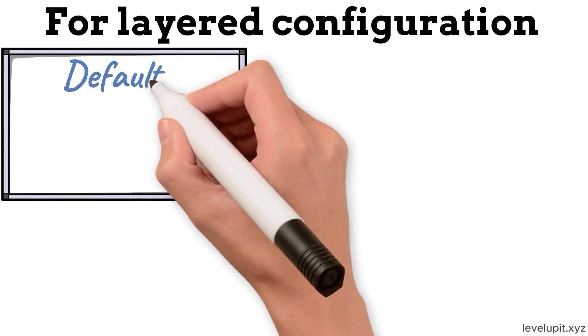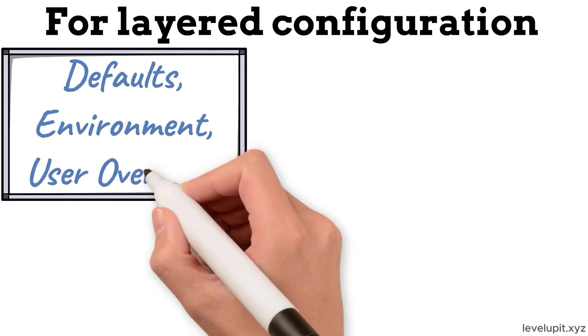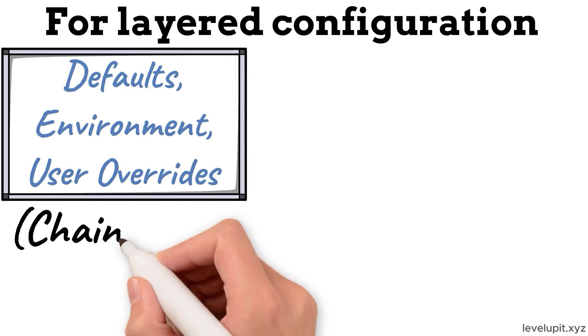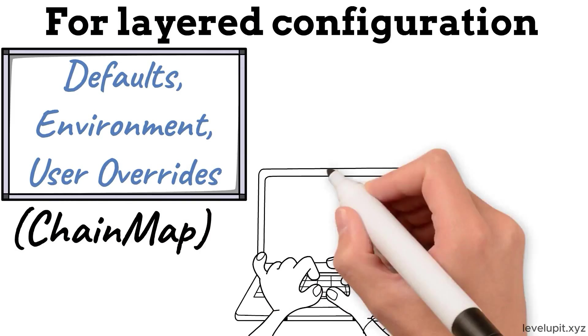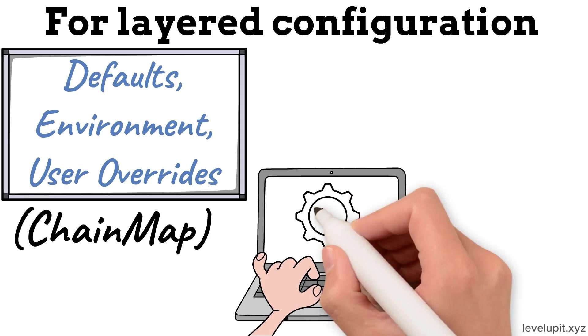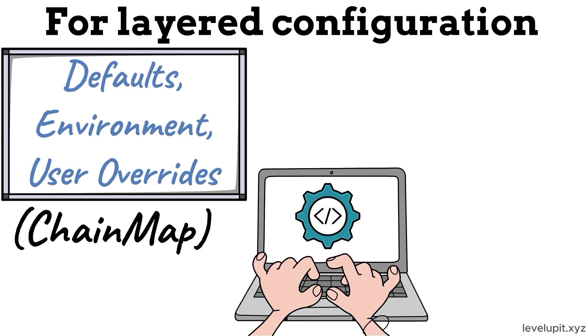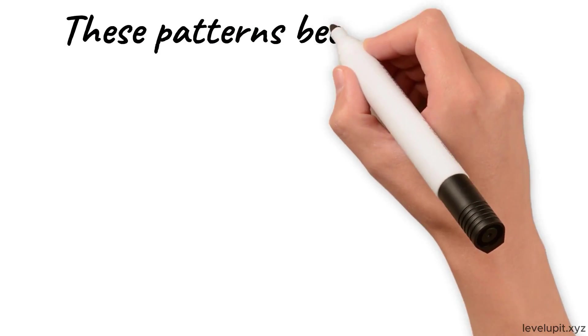For layered configuration, put defaults, environment, and user overrides into separate dictionaries and read through a ChainMap. It creates a single view, returning the first value found in the top layer, then falling back as needed. There's no need to merge or copy until a final frozen snapshot is required. Over time, these patterns become instinct.